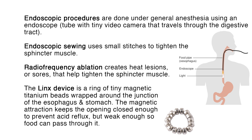Endoscopic procedures are done under general anesthesia using an endoscope or a tube with a tiny video camera that travels through the digestive tract. Endoscopic sewing uses small stitches to tighten the sphincter muscle. Radio frequency ablation creates heat lesions or sores that help tighten the sphincter muscle. The LINX device is a ring of tiny magnetic titanium beads wrapped around the junction of the esophagus and stomach. The magnetic attraction keeps the opening closed enough to prevent acid reflux but weak enough so food can pass through it.